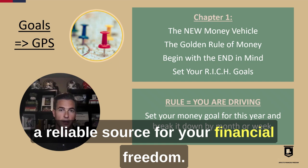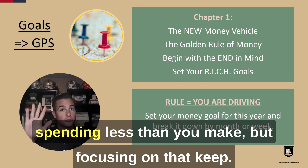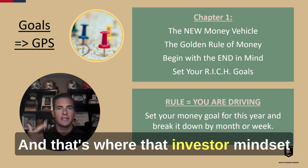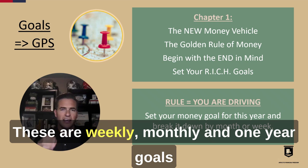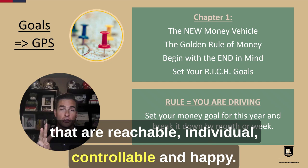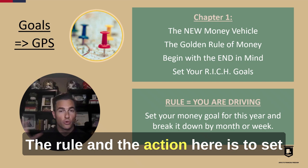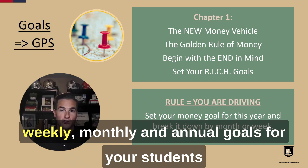We want to give them a clear understanding of what one of their goals should be in the golden rule: spending less than you make, but focusing on that keep. And that's where that investor mindset and actions come back into play. Then we have to set our RICH goals — begin with the end in mind, setting these destinations. These are not mega-money millionaire goals; these are weekly, monthly, and one-year goals that are reachable, individual, controllable, and happy. The action here is to set those weekly, monthly, and annual goals for your students so they understand how and where they're going.